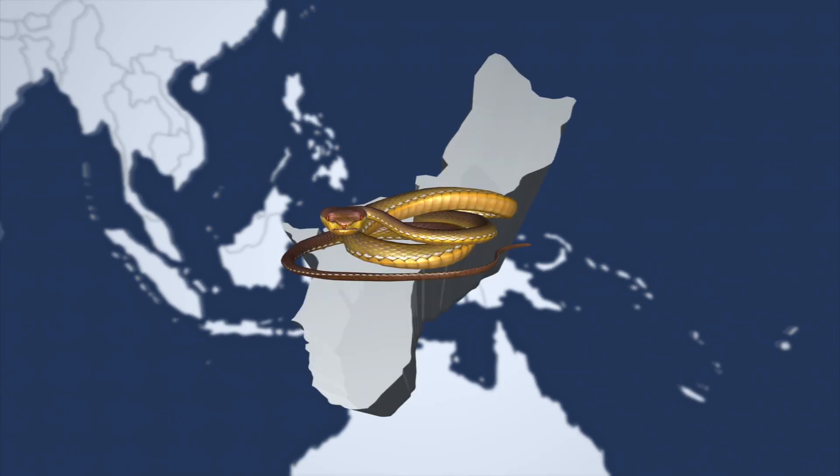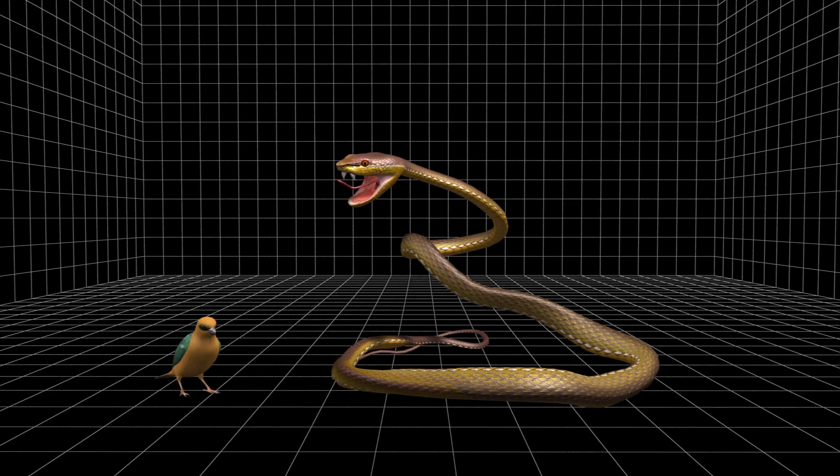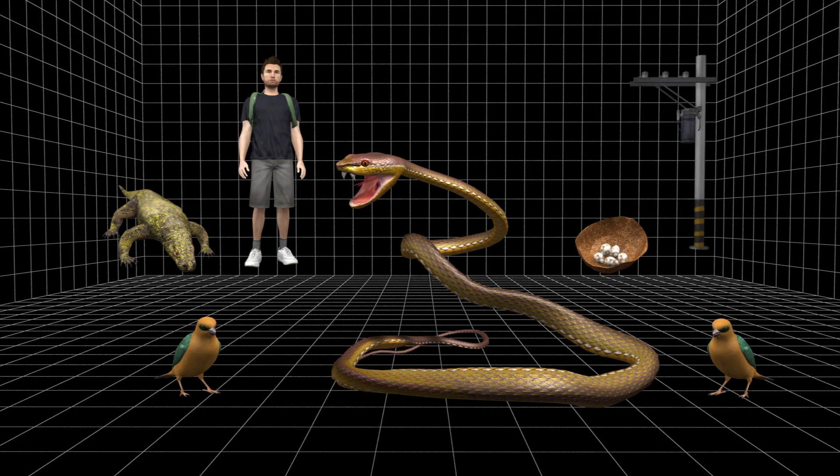The brown tree snake has plagued Guam for years, destroying native wildlife, eating birds' eggs, biting residents and knocking out electricity.